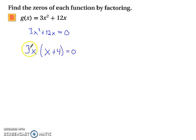So we have two sets of terms, so a monomial and a binomial, that are being multiplied to each other. So let's set each part equal to 0. So 3x equals 0, and then our x plus 4 equals 0. So x equals negative 4, or x equals 0.